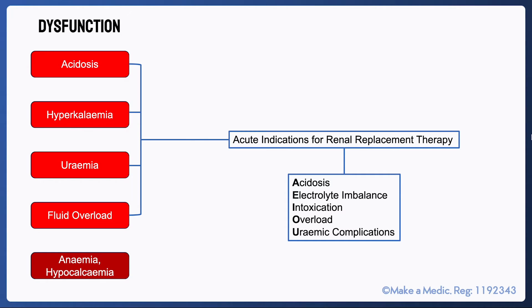It is worth noting that attempts should be made to address the root cause in acutely unwell patients and medically manage these complications as they arise. Their presence upon initial assessment does not mean that the patient requires transfer to ITU and renal replacement therapy straight away — they may respond very well to medical treatment. For example, a patient with a severe pre-renal AKI secondary to sepsis may be acidotic and hyperkalaemic to begin with, but may respond very well to initial ward-based treatments including IV antibiotics, fluids, and insulin dextrose.